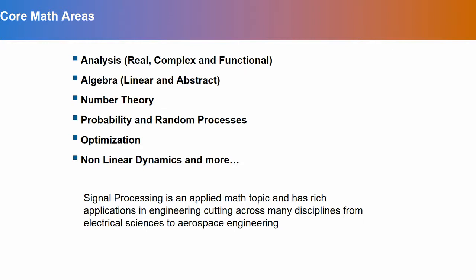Now, if you think about what core areas you require in signal processing, well you need analysis, real complex and functional analysis from math, algebra both aspects of linear algebra and abstract algebra, the number theory when you have to deal with transforms and efficient ways for realization of these transforms, then probability and random processes which is the core for signal detection estimation and many of the problems that we see in communications, optimization, linear, non-linear, combinatorial and many different forms of optimizations which we require, non-linear dynamics and more. For example, if you think about neural networks, it is nothing but glorified non-linear signal processing. We need areas in core math which have to be applied to applications towards applications in engineering that occurred across many disciplines from electrical sciences to aerospace engineering and therefore, signal processing is an applied math topic and has rich applications in engineering not necessarily restricted to the electrical sciences.